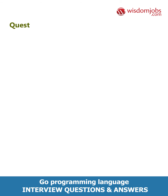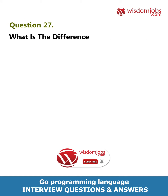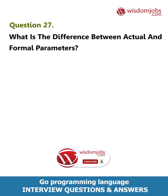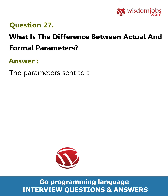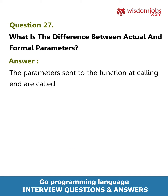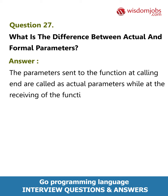Question 27: What is the difference between actual and formal parameters? Answer: The parameters sent to the function at the calling end are called actual parameters, while at the receiving end of the function definition they are called formal parameters.